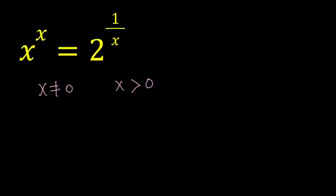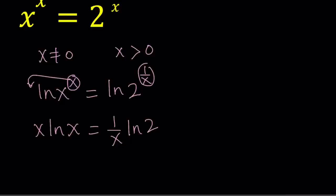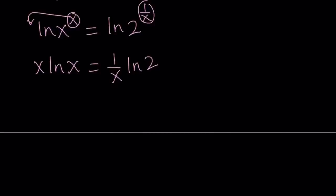We're going to take the natural log of both sides under these conditions to get rid of all the exponents, making it a little easier to solve. Moving the exponents to the front using logarithm rules: we get x ln x on the left, and 1 over x times ln 2 on the right. Since x is positive and non-zero, we can multiply both sides by x and get x squared ln x equals ln 2. This is nice because we have all the x's on one side and the constants on the other.